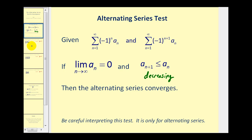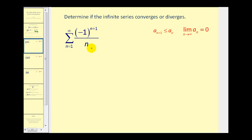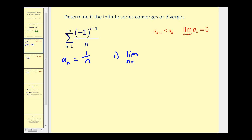Let's go ahead and take a look at some examples. The first thing we should notice is we have an alternating series because we have negative one raised to the power of n plus one. This should also remind you of the harmonic series, except now this is the alternating harmonic series. Here are the two conditions that must be met. Let's start by determining the limit as n approaches infinity of a sub n. A sub n is the non-alternating part of this formula, so a sub n equals one over n. The first condition is this limit must equal zero, and it does.